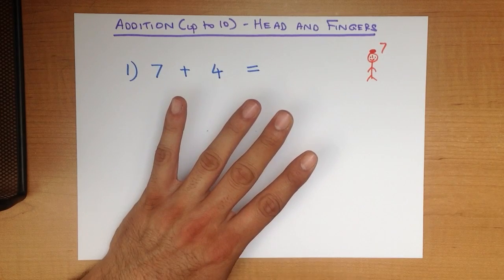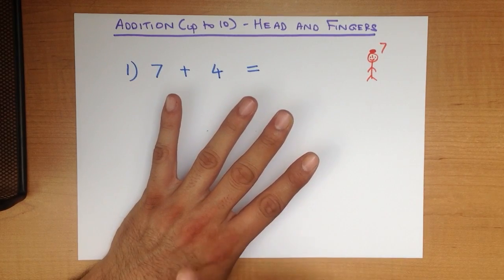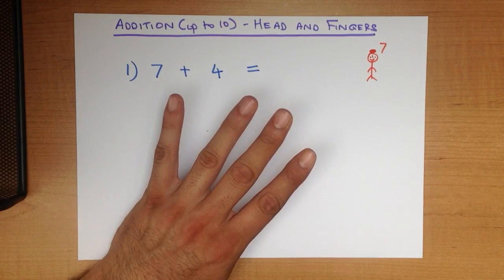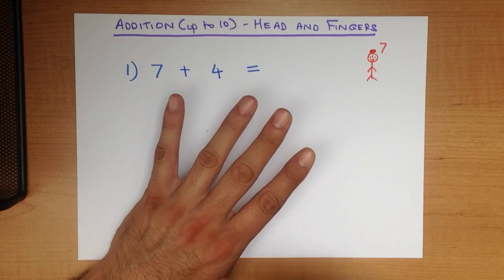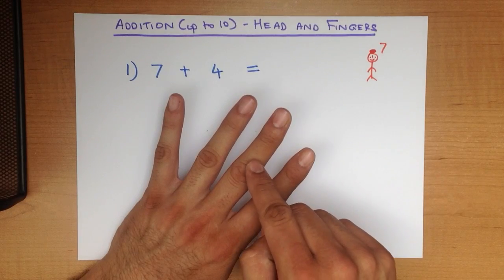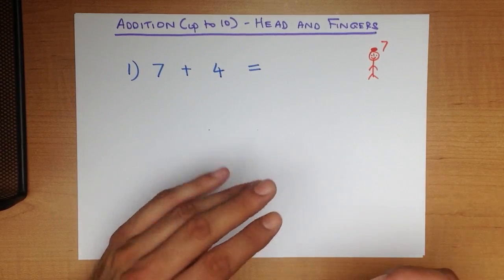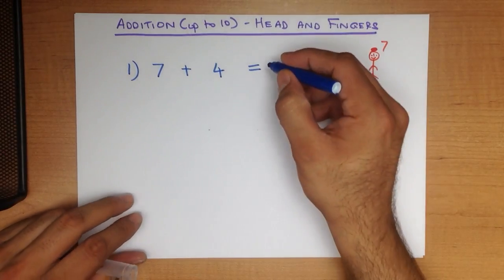What do we do then? We start with 7 and we count how many more there is. So, 7 is on my head, 8, 9, 10, 11. And that is our answer. 11.